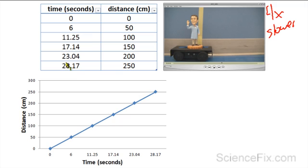So we took the time and put it on the x-axis. It's measured in seconds. We took the distance and put it on the y-axis and measured in centimeters. Now what we have here is a line graph.